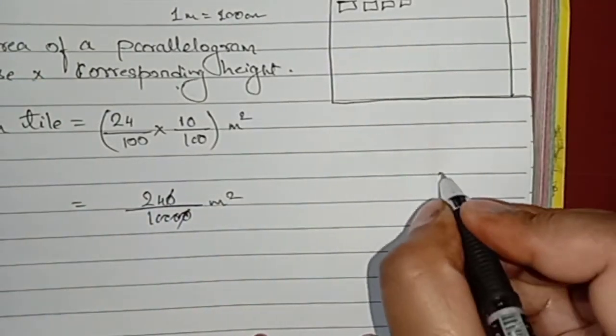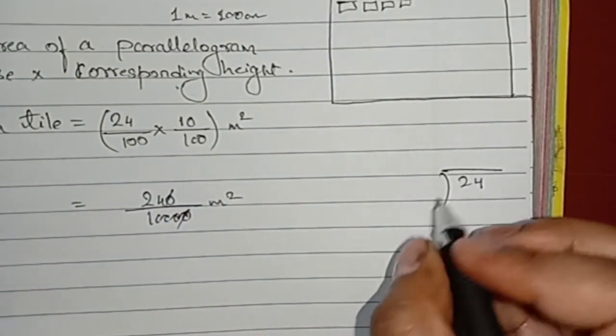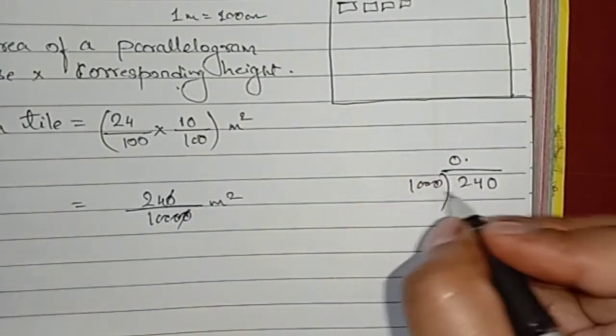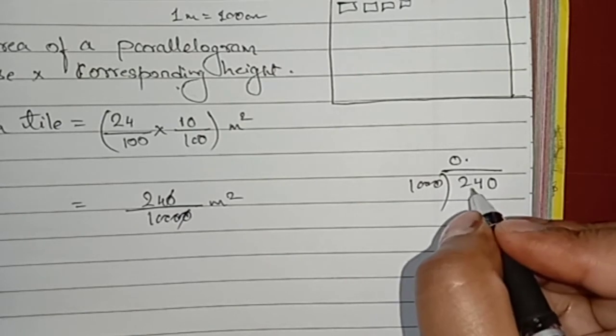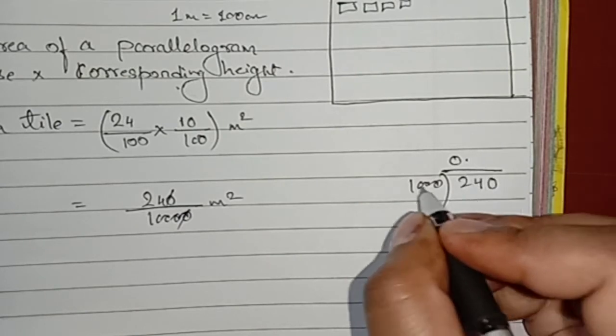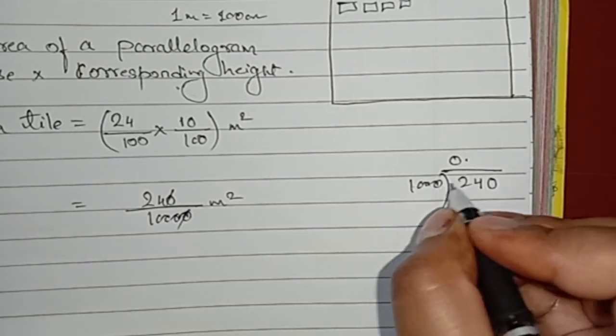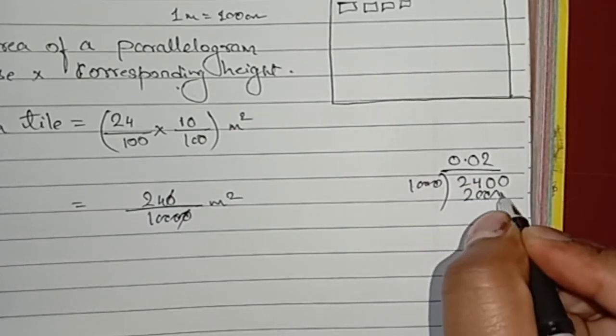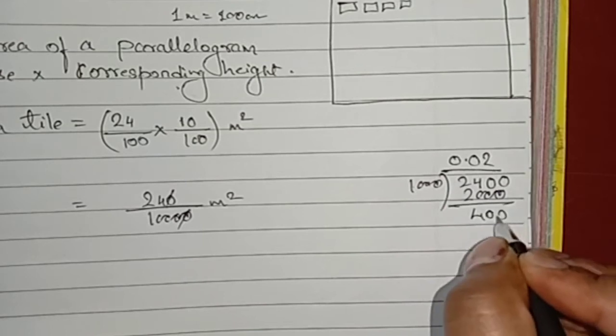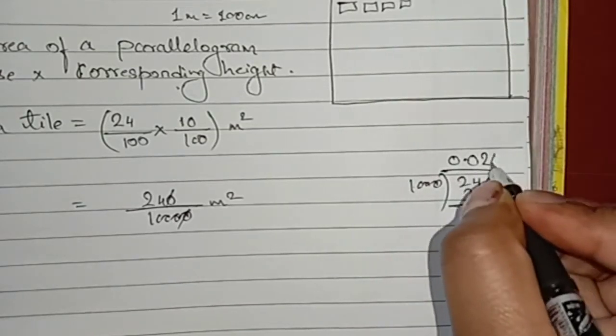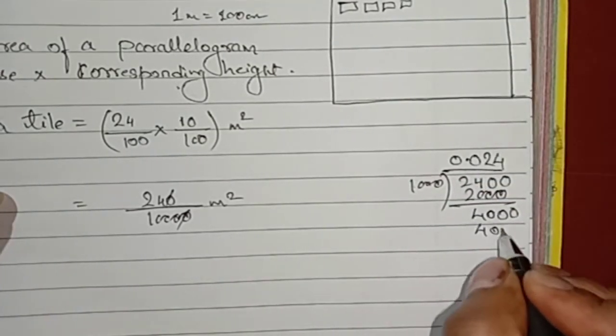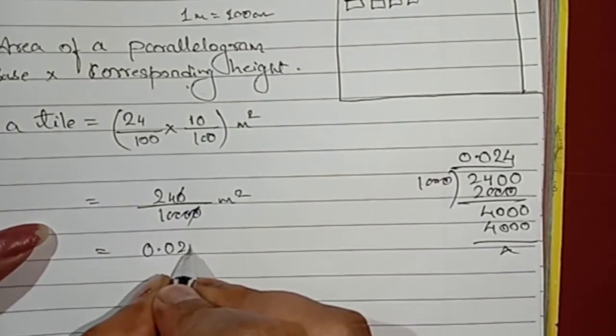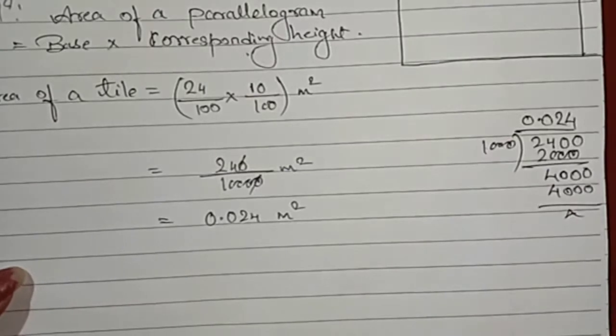How much left? We will divide 24 and 1000. 0 decimal 0 then 1 2 3 4, we need 1 more 0. 2 2 1 2 3 4 will come down, 1 more 0 we will take from here. 4 so 4000. So 0.024 meter square.